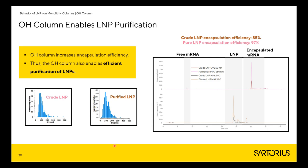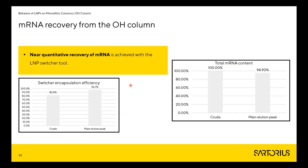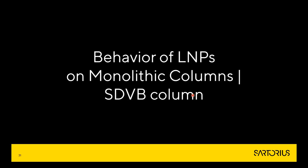We have very good recovery of mRNA on the OH column. In another example, we increase encapsulation efficiency from 83% in the crude fraction to 97% in the main elution peak. The total mRNA content in the main elution peak was 95% of the starting material. Adding some of the free mRNA fraction, this gets close to 100% recovery. So basically, we don't lose any mRNA for quantification on our LMP Switcher method.